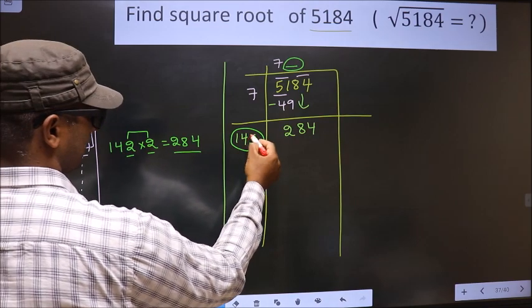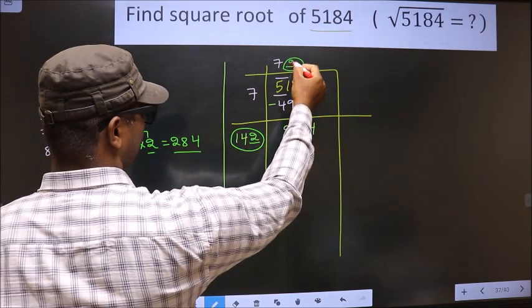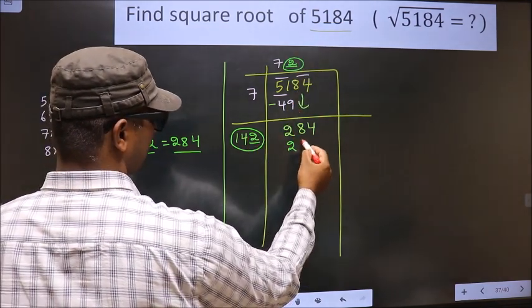So, we take 2 here, here, and here: 284.